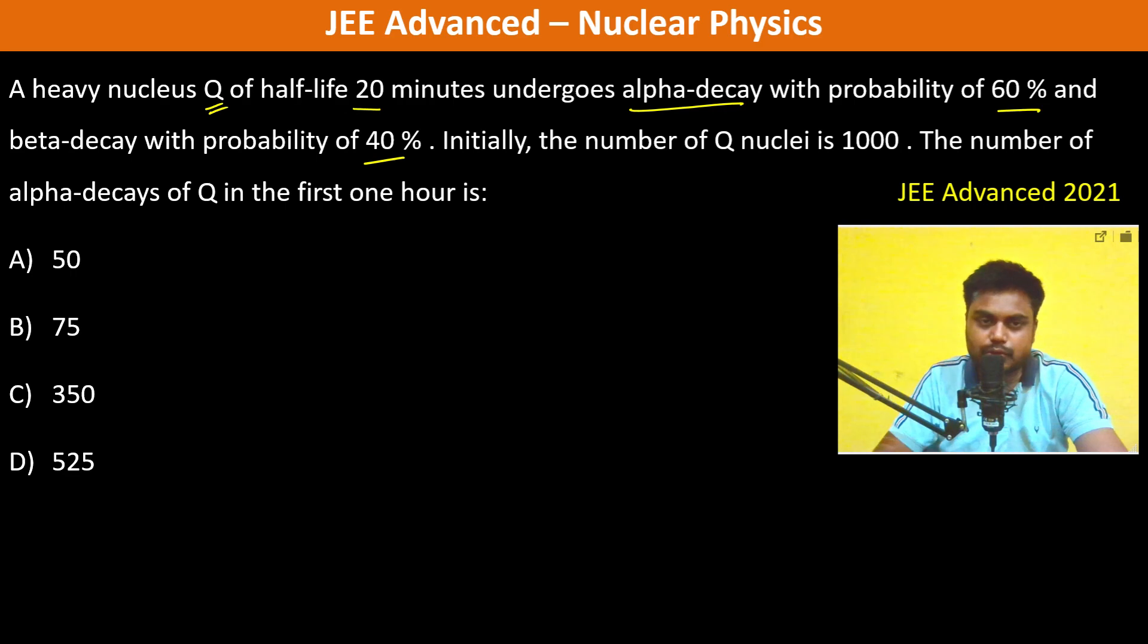So 20 minutes is the half-life, so in 20 minutes it becomes 500, and then again 20 minutes it becomes 250, again 20 minutes it becomes 125. Therefore, the decay which has happened is 1000 minus 125, which is equal to 875.